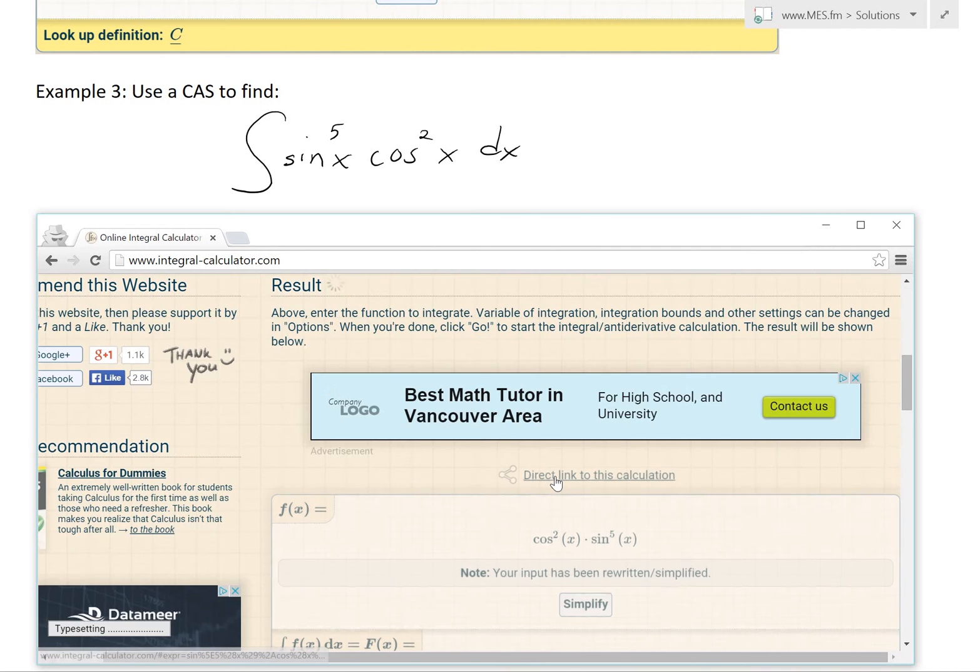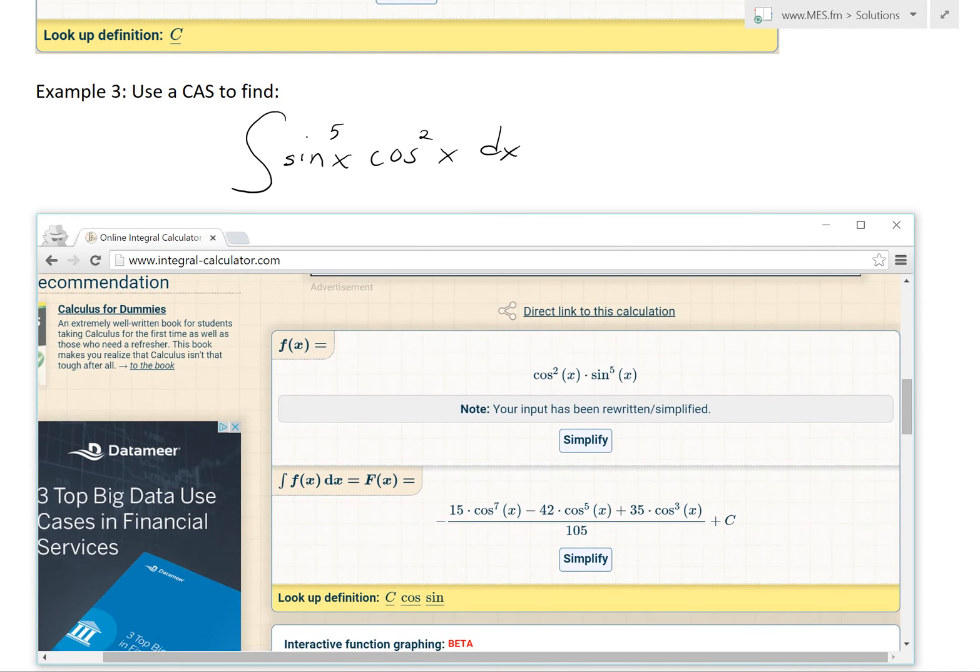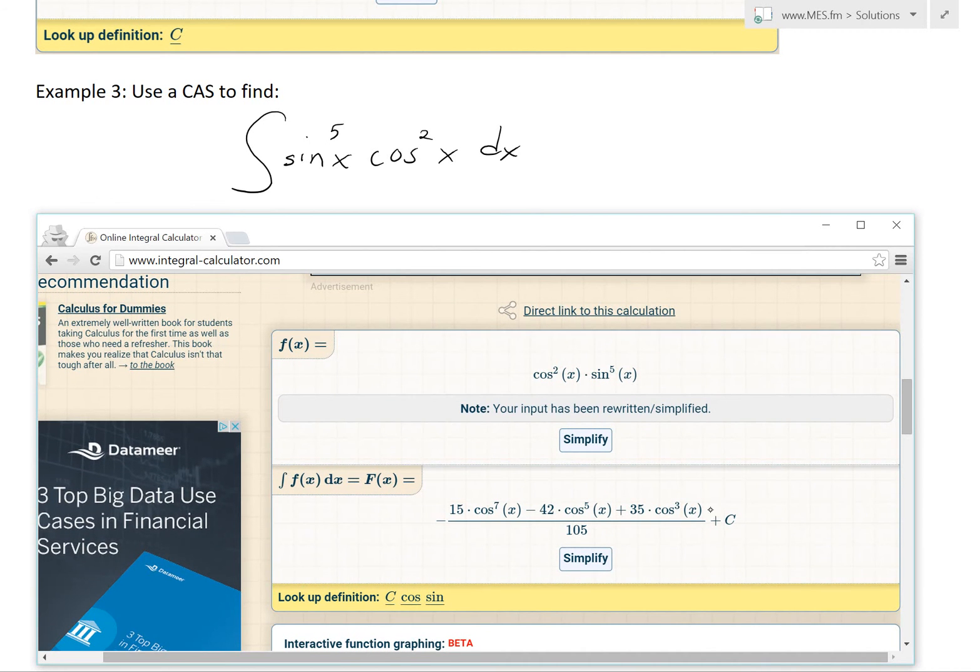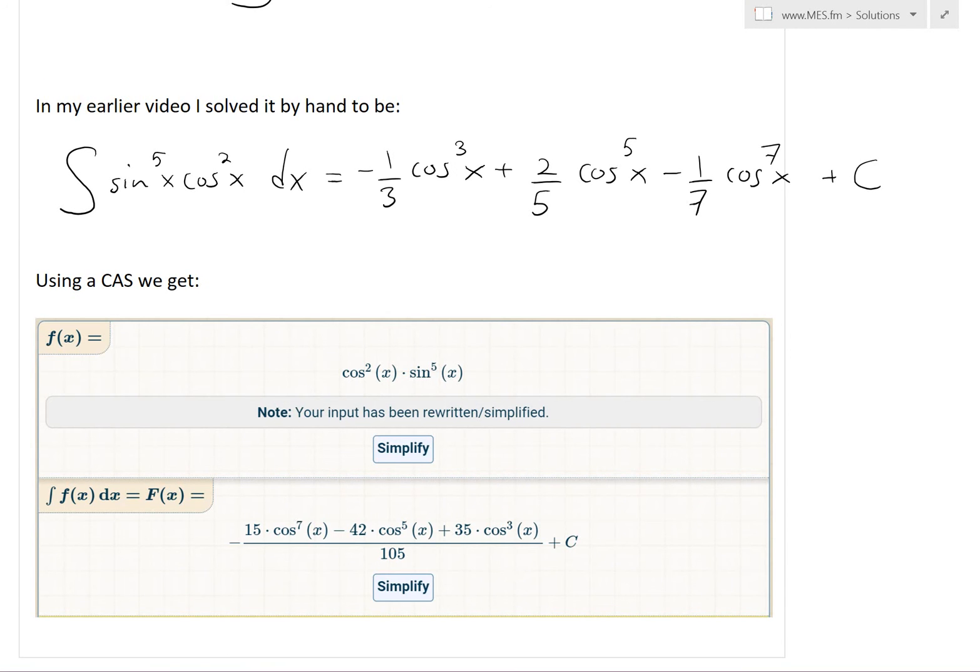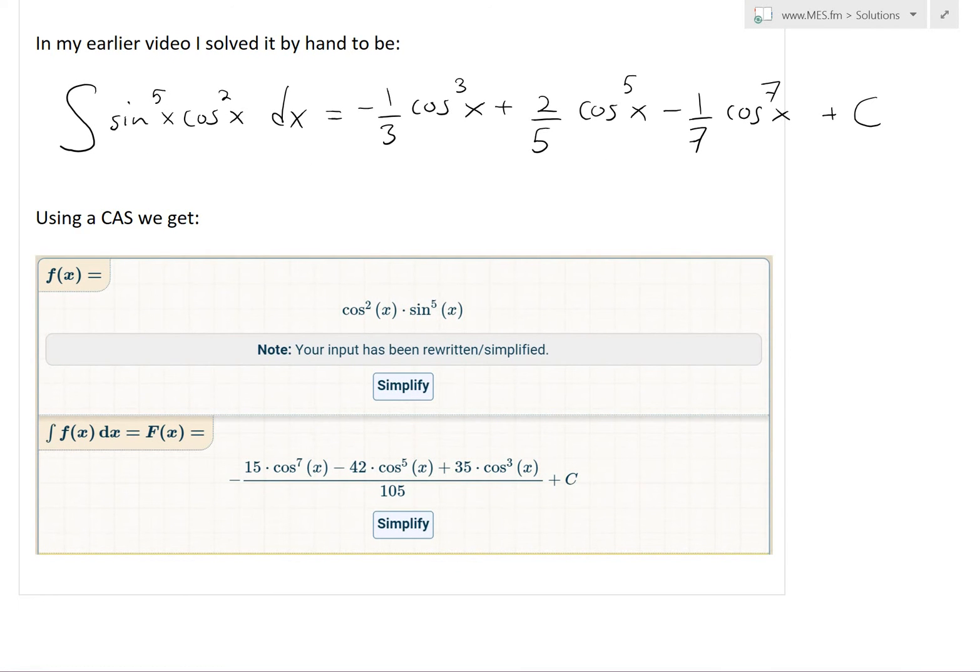So you press enter, and we get the answer right here. So this looks a bit different than ours. If I copy and paste it, we get this right here. So as you can see, this looks different. But then this is actually the exact same thing. These just have this 1 over 5 division by it. So we could show that it's the same thing.